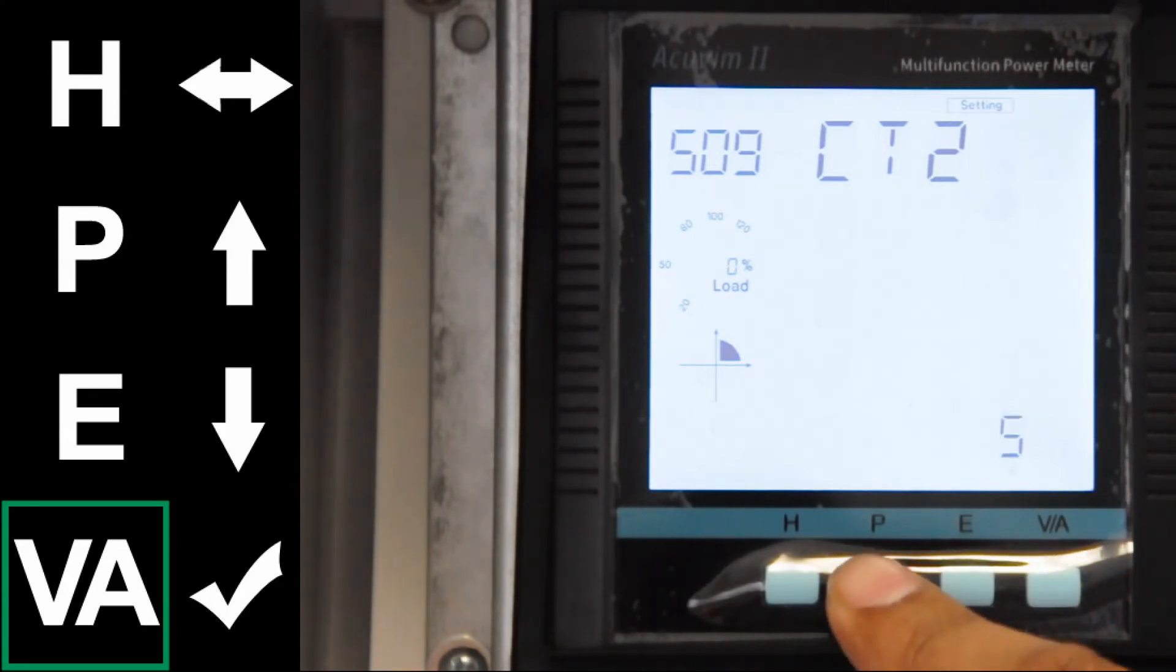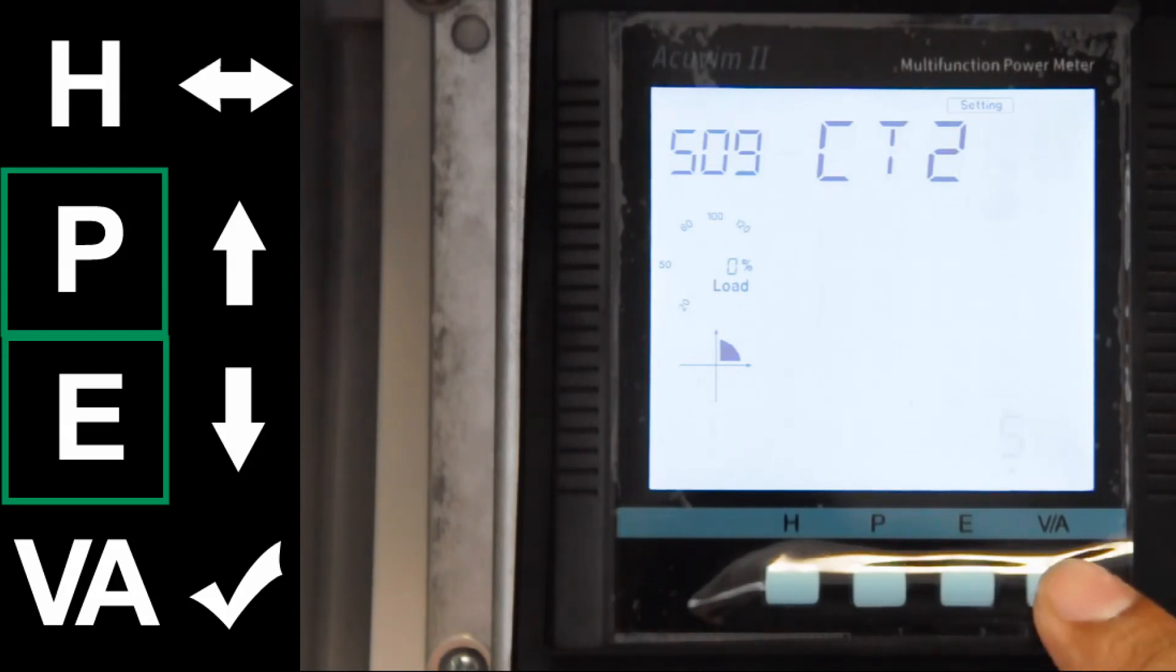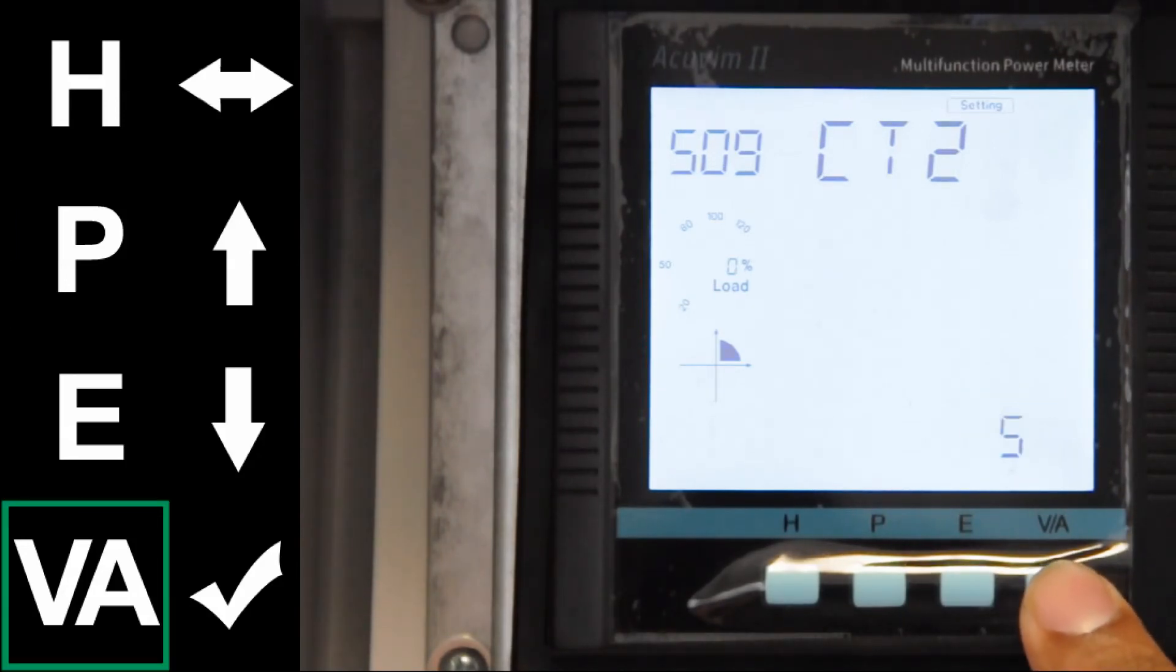Press P or E to increase or decrease to the desired value. When done, press VA to exit the session.